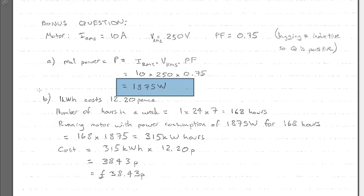Part B, we've got the additional information that one kilowatt hour of electricity costs 12.20 pence. So we're going to be running this motor continuously for one week and we've got this value in hours. So we need to find how many hours in a week. So that's one hour times 24, because there's 24 hours in the day, times seven because there's seven days in the week, which will give you an answer of 168 hours.